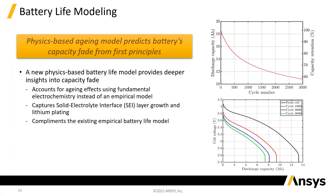So physics-based ageing models to predict battery capacity. There are a lot of empirical models that have been around and are in the code, but now they're starting to do them based on chemistry. So you can include lots more of the chemistry, and particularly that chemistry that results in the ageing of the cell.